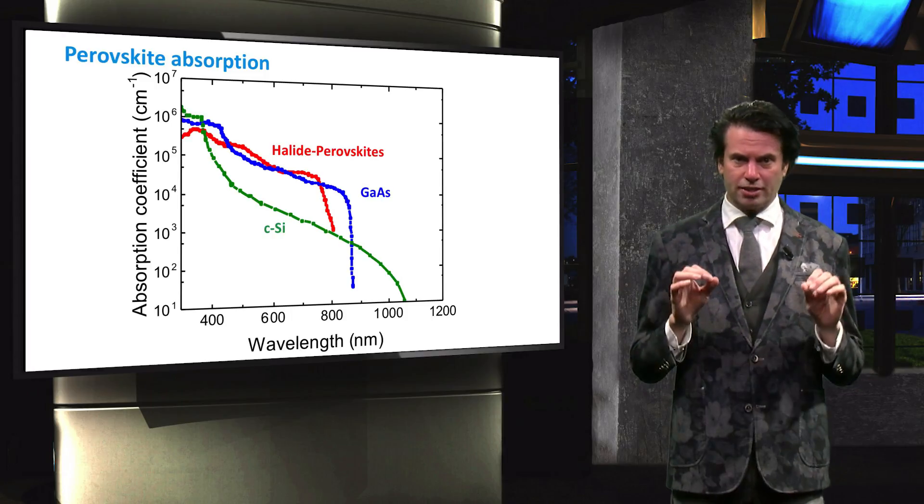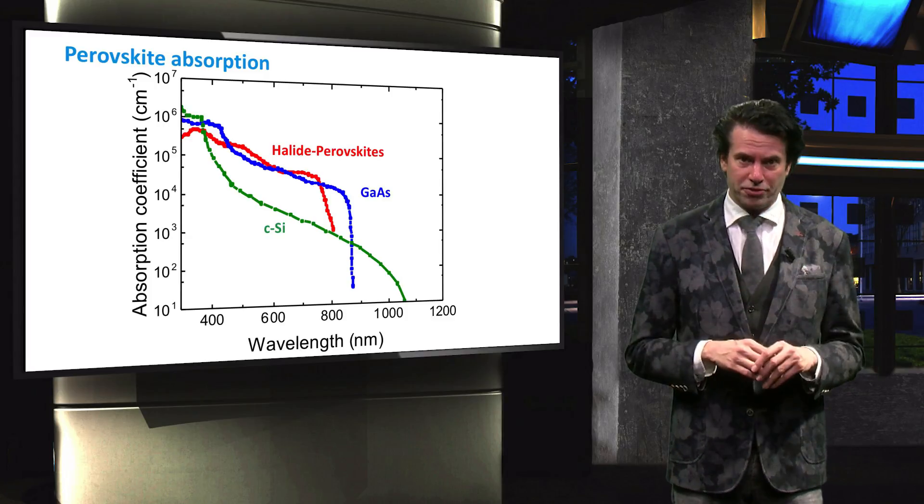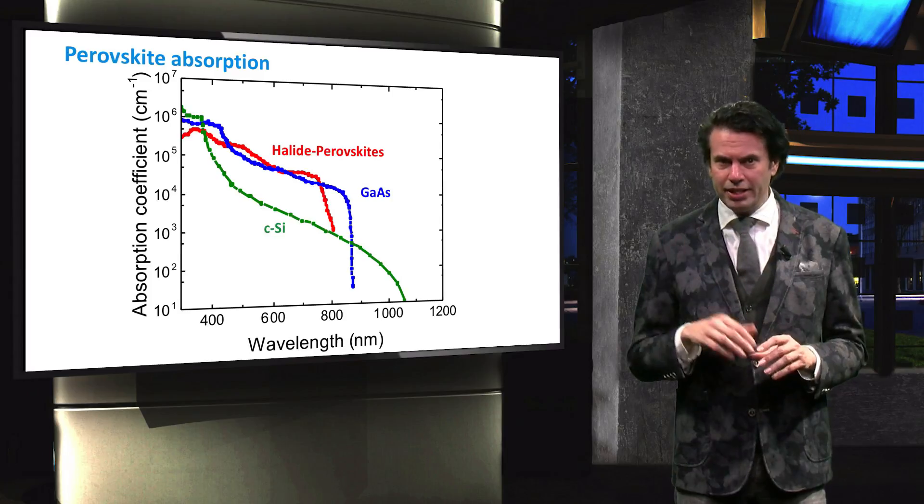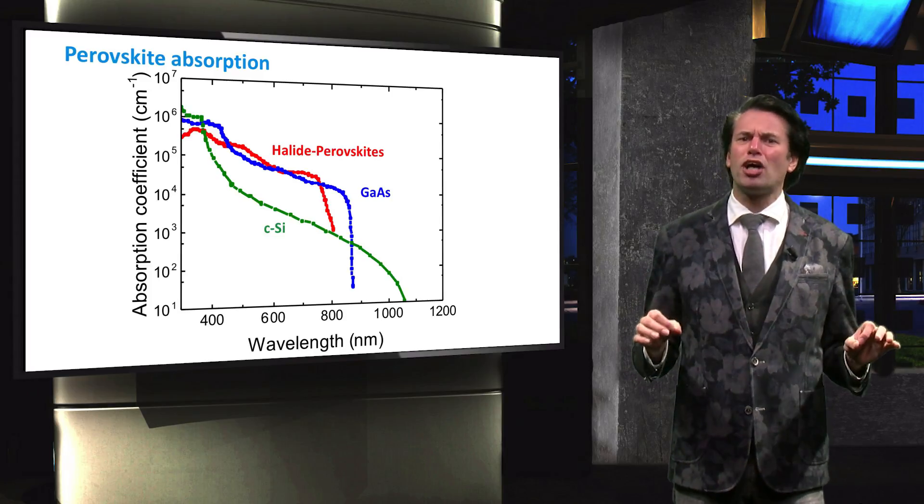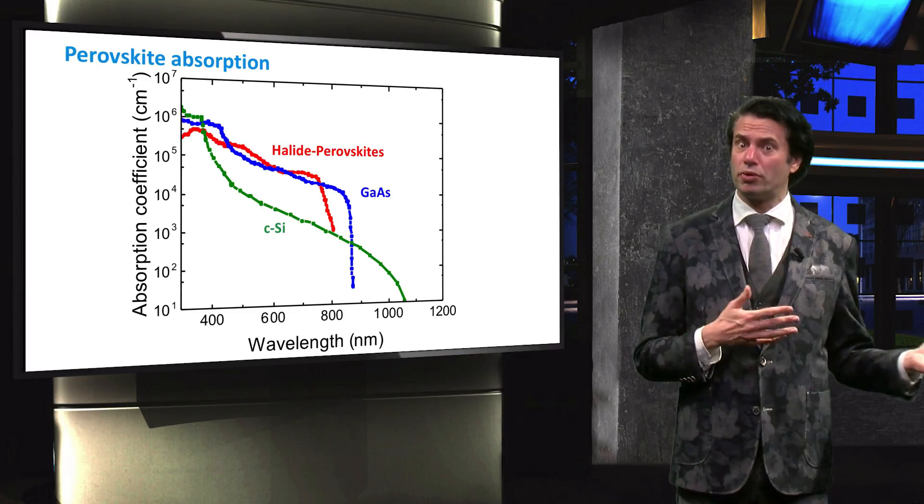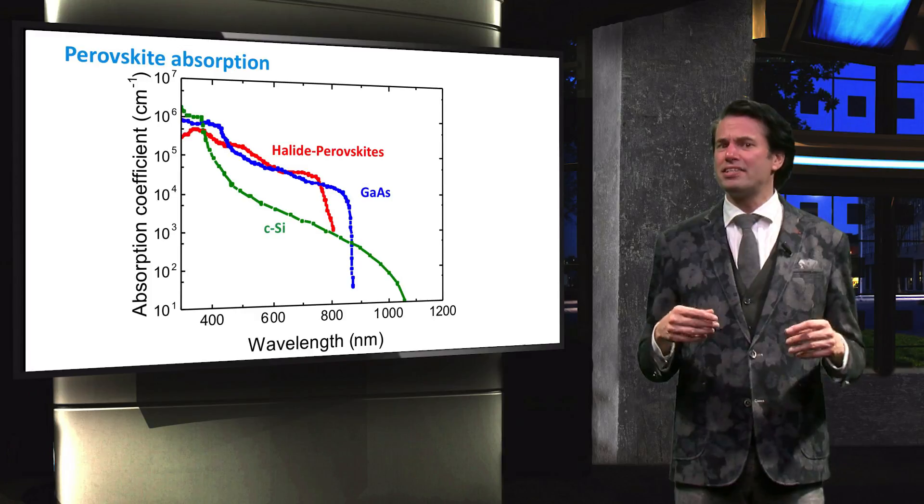These absorption characteristics make the material suitable to be used as thin film PV material. Secondly, methyl ammonium lead iodide has a much sharper bandgap when compared to crystalline silicon. The electrical properties are highly interesting as well.